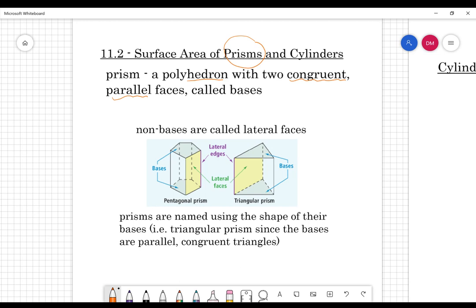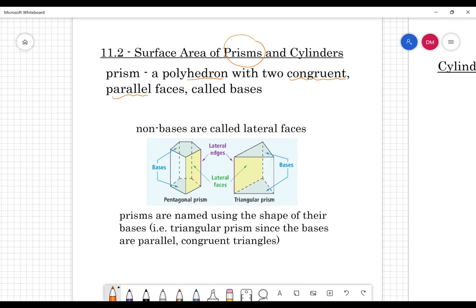So you can see these two examples of prisms down here, that they are named based off of their actual base. And the base in this prism right here is a pentagon. You can see that it's got a pentagon base right here, right here.